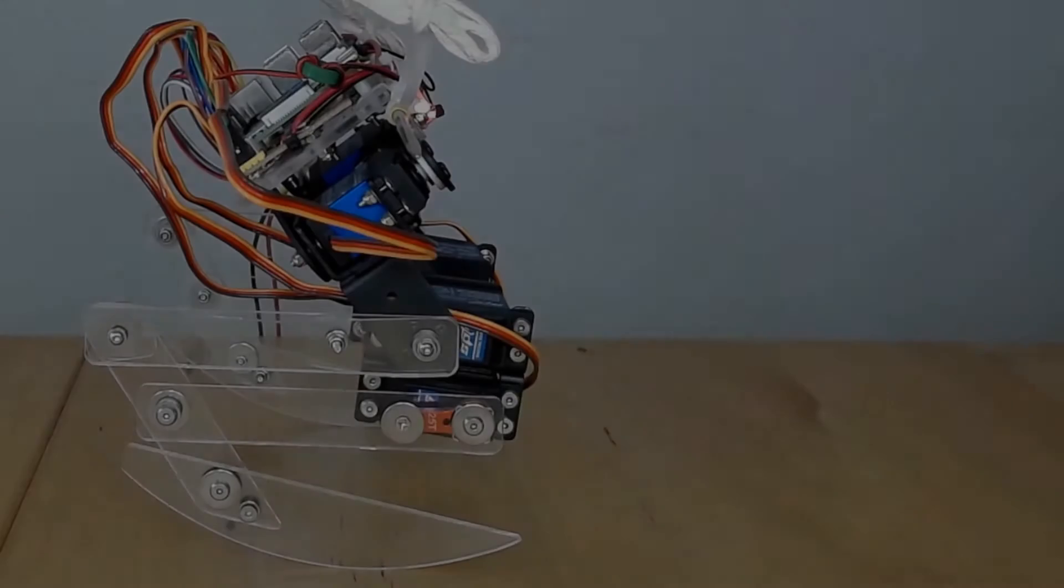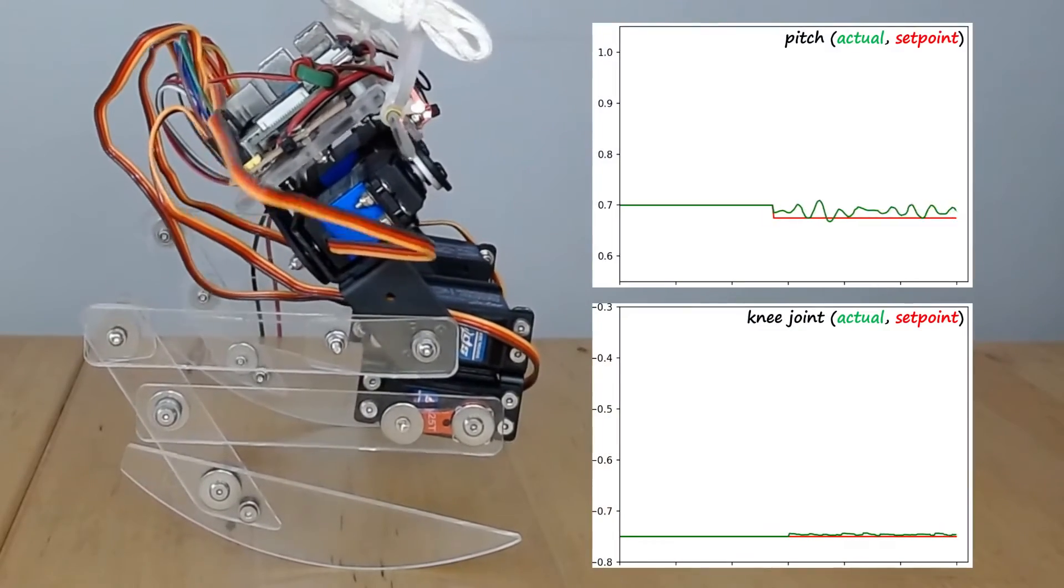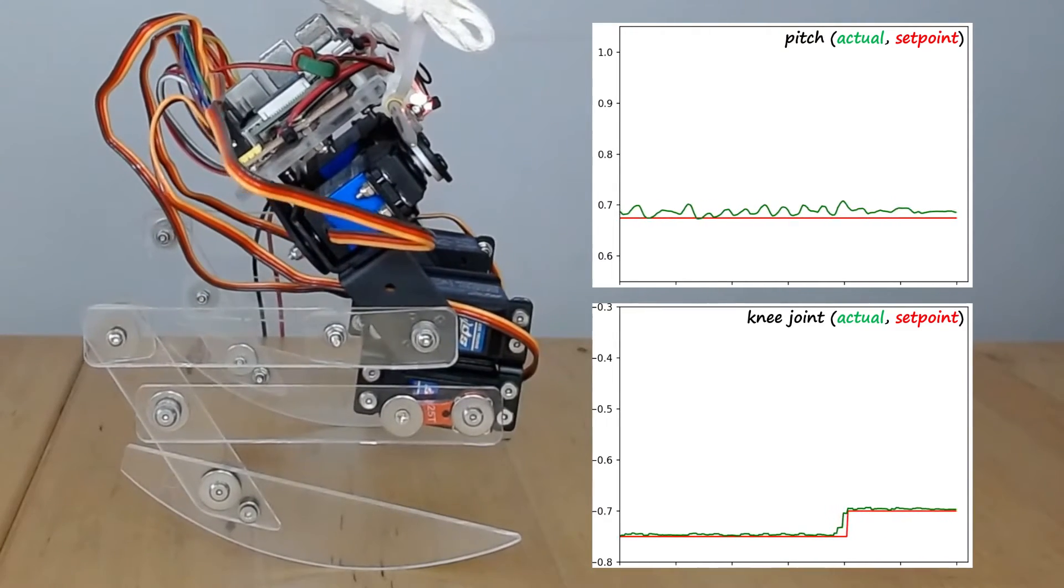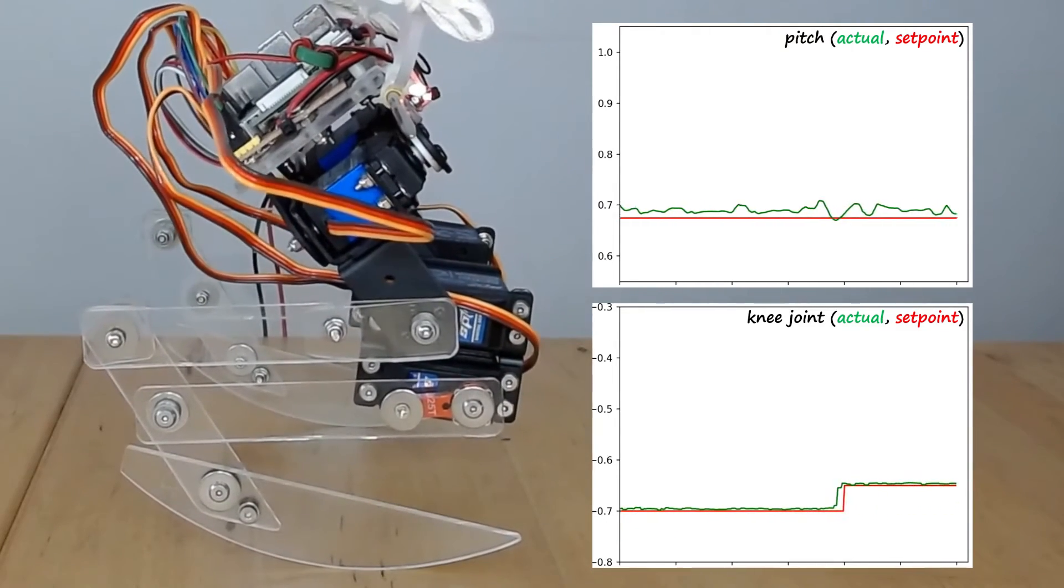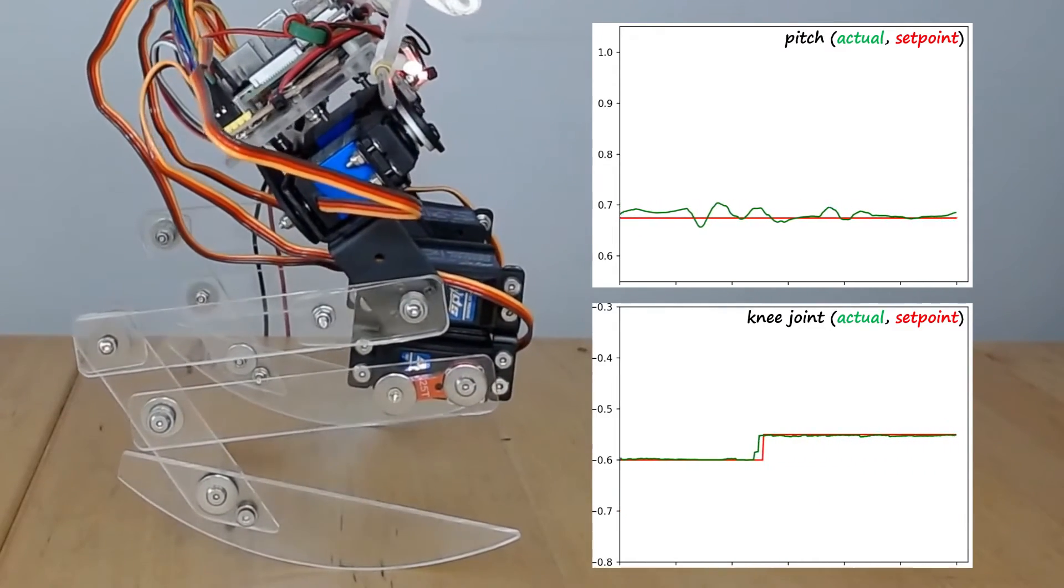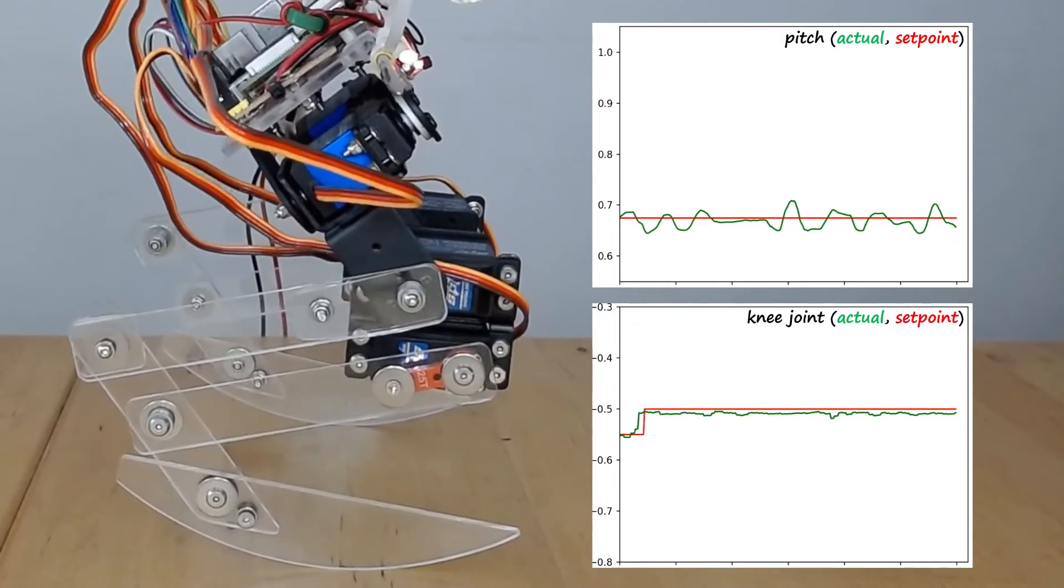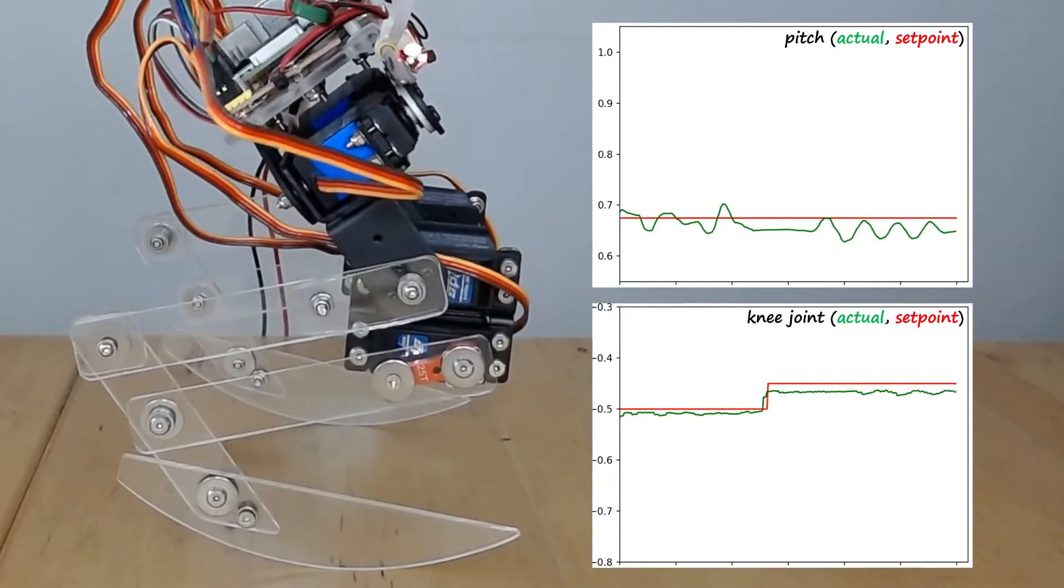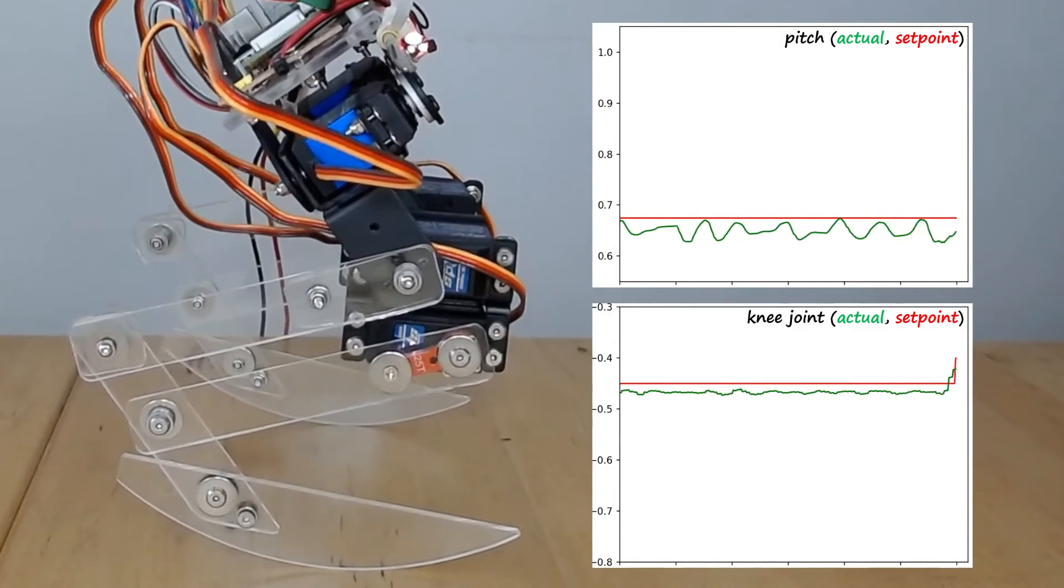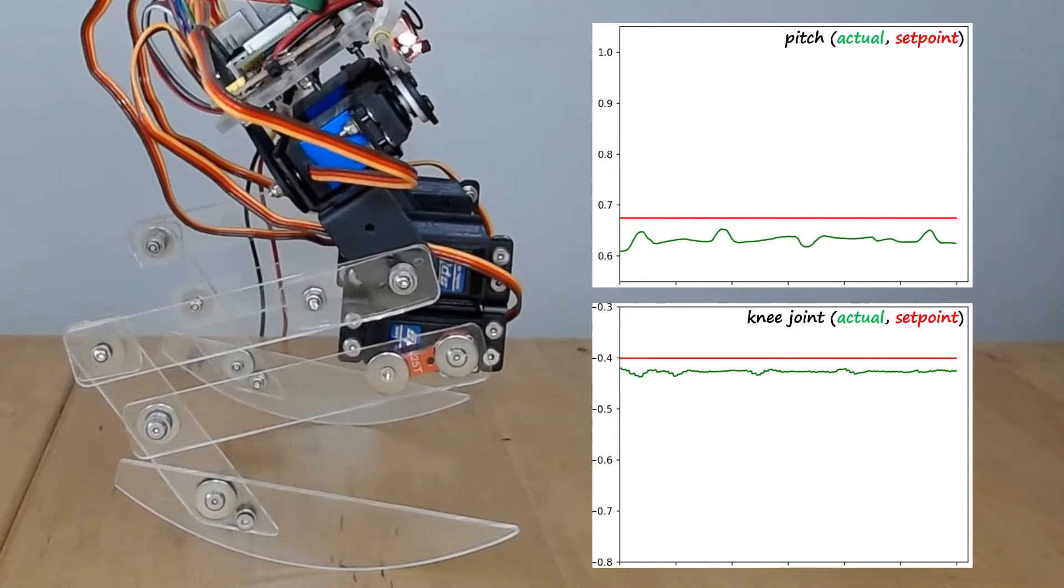So how did the trained reinforcement learning policy go? As the knee setpoint increases, things are looking good. Even at a height of around minus 0.5, the legs are still balancing around the middle of the curved feet. As we go higher, the tracking accuracy decreases a bit, but they still seem to be balancing okay.